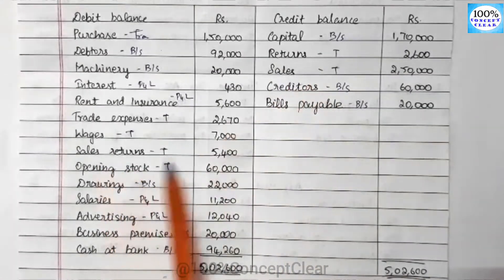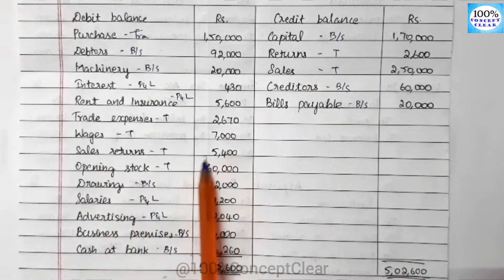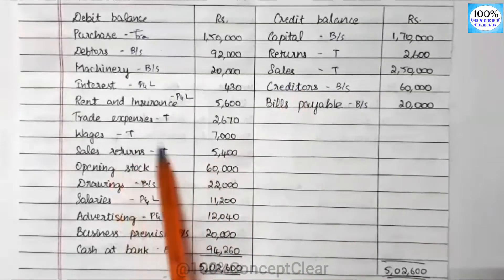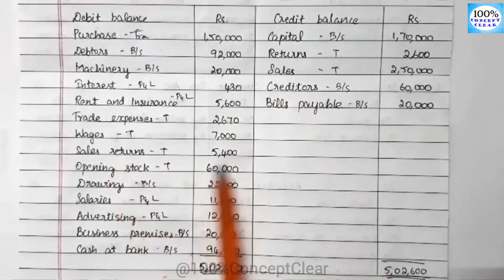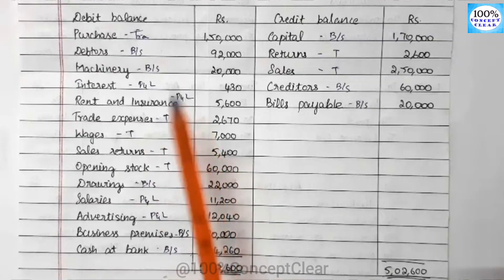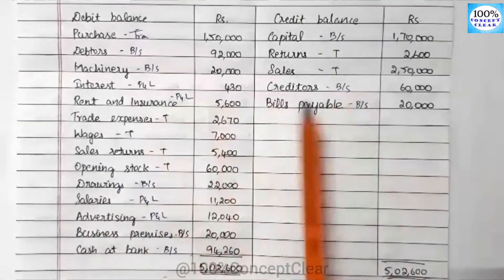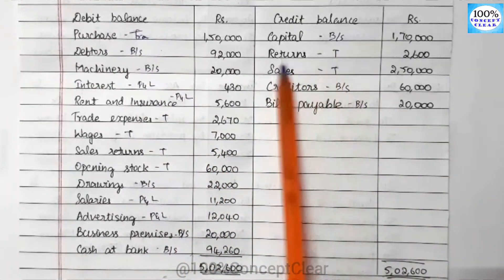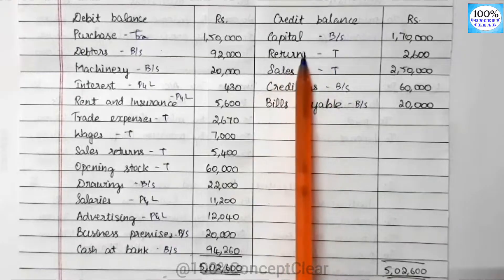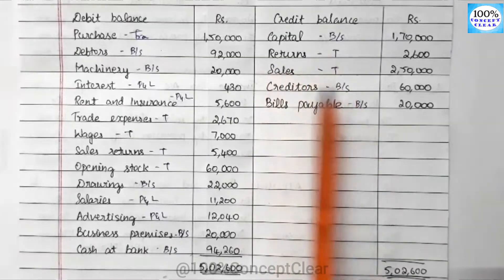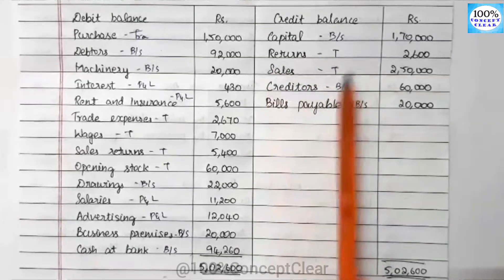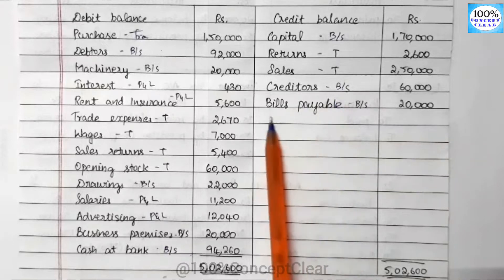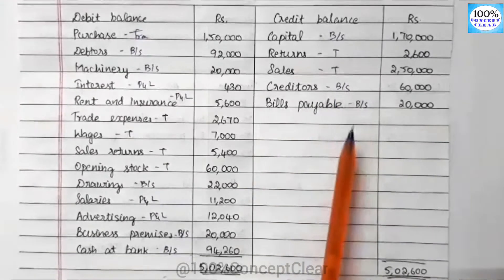The sales return amount is debit, because we will minus the sales return from debit. It is the opposite. Returns in the Trading account — this is the purchase return. Sales in the Trading account. Credit as Balance Sheet. And bills payable in the Balance Sheet.